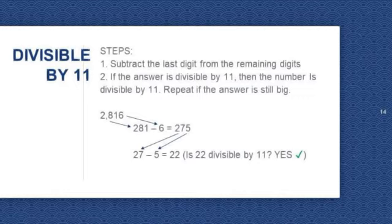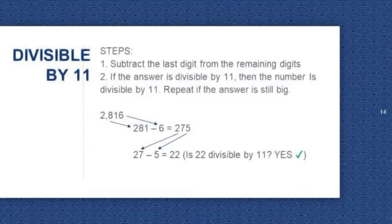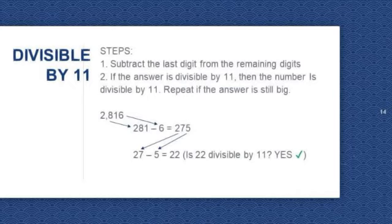Let's have another example: 2,816. The last digit is 6. Subtract it from the remaining digits, which are 281. 281 minus 6 is equal to 275. 275 is still big, so we need to repeat the steps. The last digit is 5. Subtract it from the remaining digits, which are 27. 27 minus 5 is equal to 22. Is 22 divisible by 11? Yes. So 2,816 is divisible by 11.